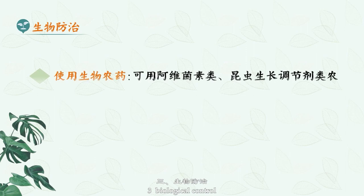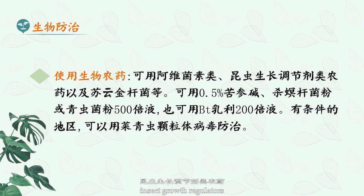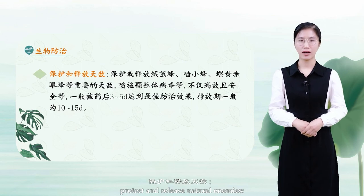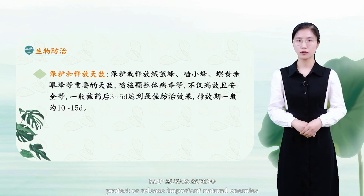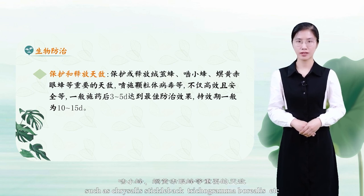Three: biological controls. One: use of biological pesticides including Avermectins, insect growth regulators, and Bacillus thuringiensis. Two: protect and release natural enemies, such as important natural enemies including Chrysalis, stickleback, Trichogramma borealis, etc.